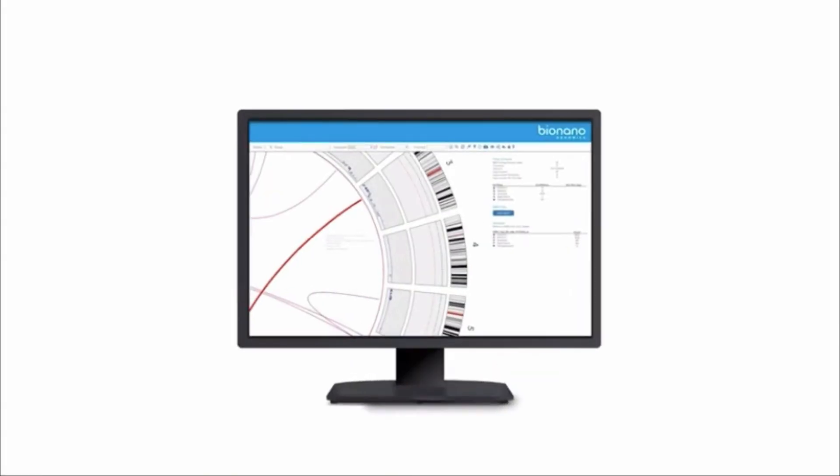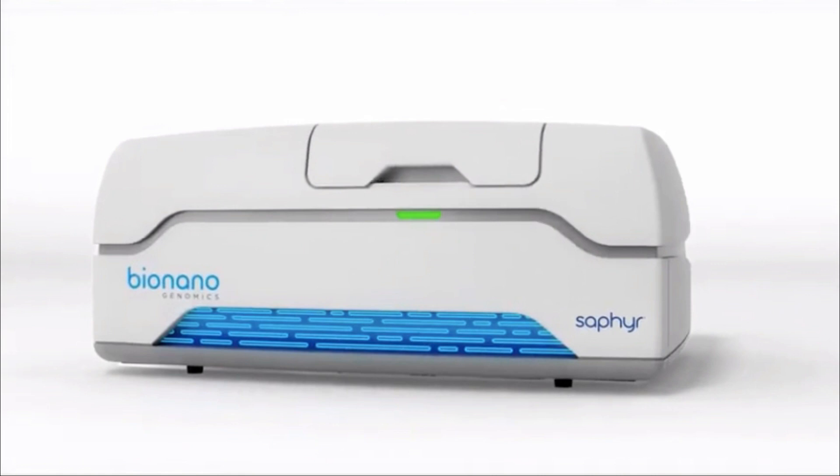BioNano Access software also allows easy visualization and filtering of SV calls using our built-in control SV database. From the thousands of SVs found in any human sample, you can remove variants present in controls and narrow down your SVs of interest to a handful with just a few clicks.